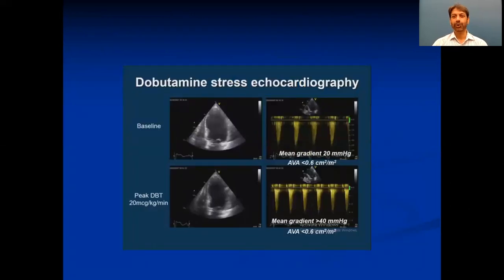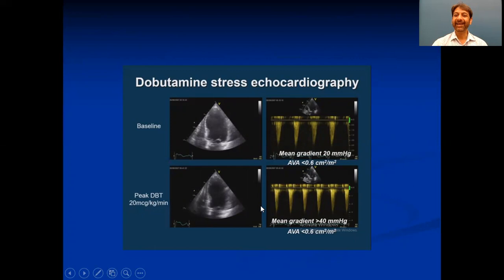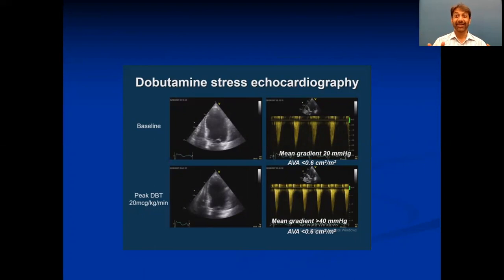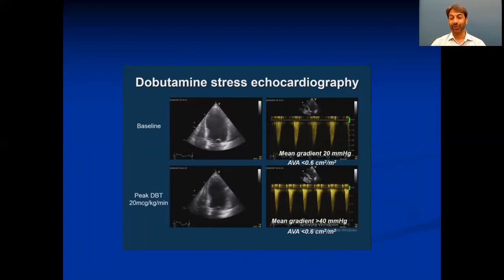To decide, you do a dobutamine stress echo. In this patient, if you do a dobutamine stress echo and at the peak dose of 20 micrograms per kg per minute, if the mean gradient increases and the area remains the same at 0.6 — the gradient is increasing — that means it's true severe AS with adequate contractile reserve, because it's able to increase the gradient across the valve while the area remains the same.